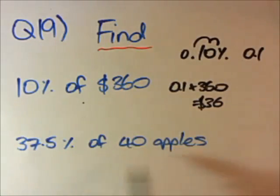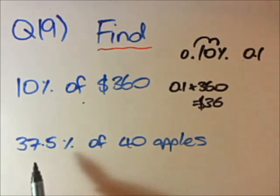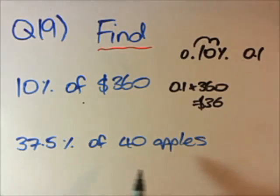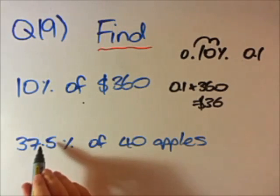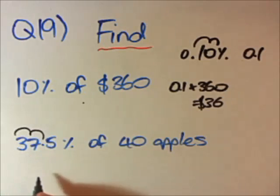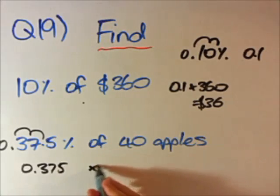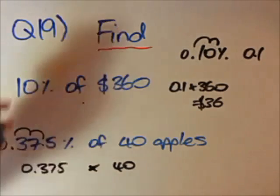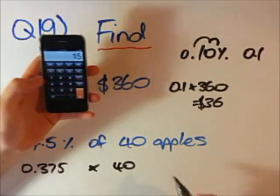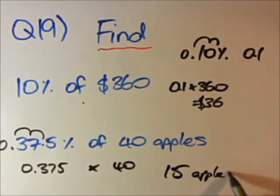Now let's use the same technique for 37.5% of 40 apples. We have a percentage of something and want to make it a decimal, then multiply. Converting 37.5% to a decimal by dividing by 100 gives 0.375. So it becomes 0.375 times 40. Using the calculator: 0.375 times 40 equals 15. So 37.5% of 40 apples is 15 apples.